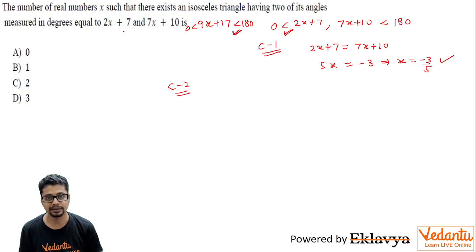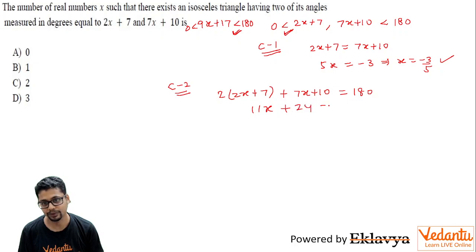The other possibility is, let's say 2x plus 7 is the repeated angle. That means 2 times 2x plus 7 plus 7x plus 10 should be equal to 180, because if this is the repeated angle, then this is the third angle, so their sum should be 180. So you get 4x plus 7x, 11x, 14 plus 10, 24 equal to 180, so you get x to be 156 by 11.